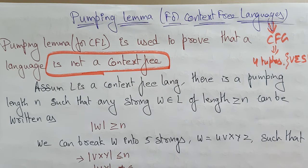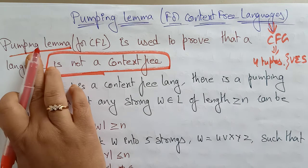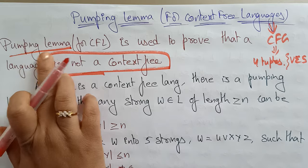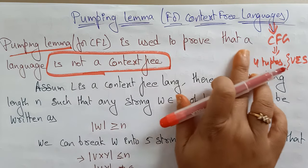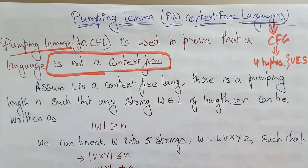If we can show the language is not context-free, then the pumping lemma applies, because the pumping lemma is specifically used to prove that a language is not context-free. So the approach is: assume it is context-free, then derive a contradiction to show it is not.